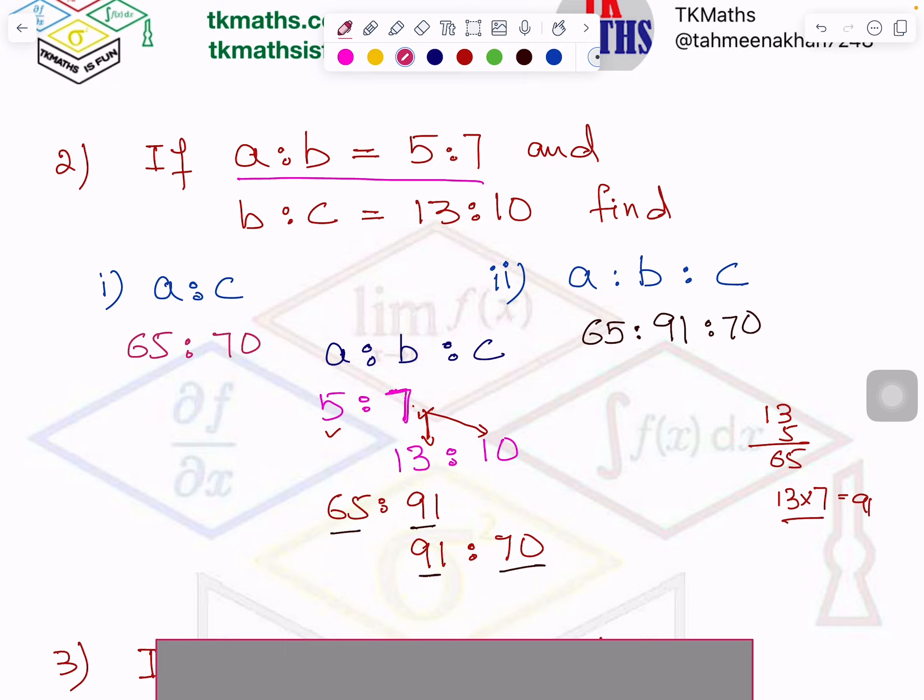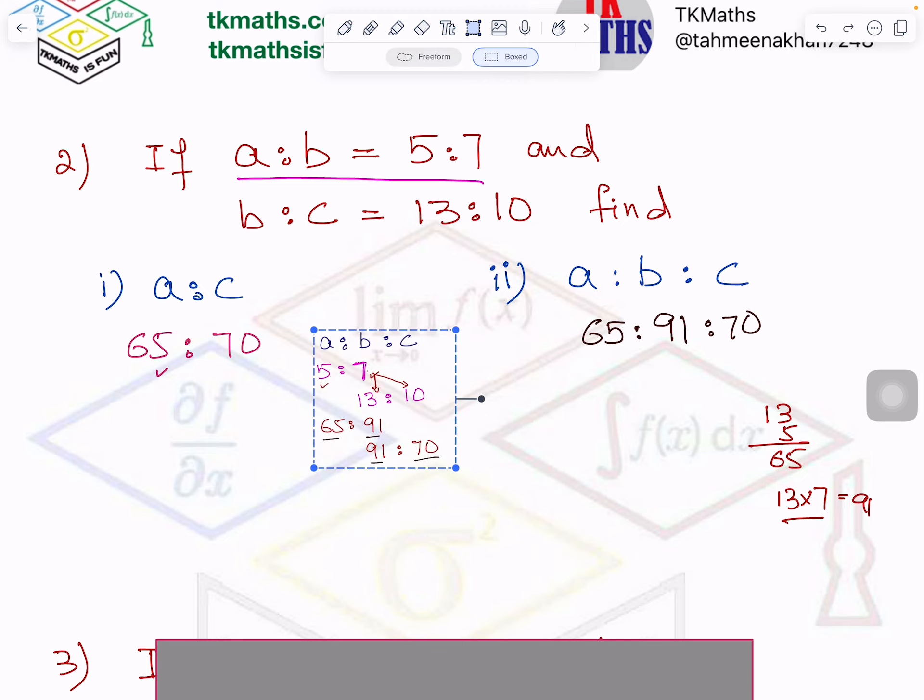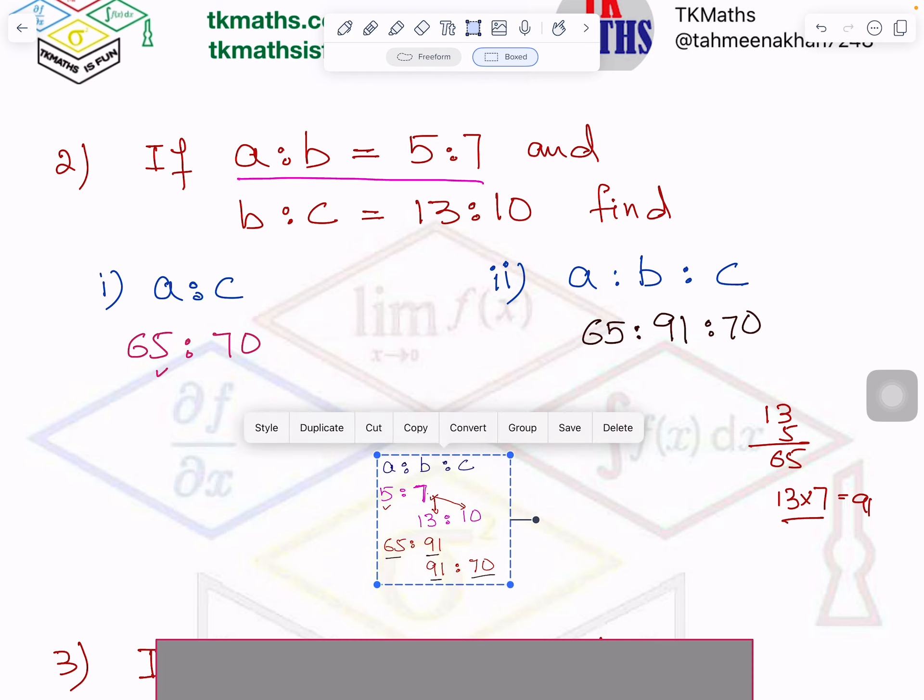So this is 70. Now you will simplify 65 and 70. So you will cancel it by the table of 5. 5 is better because the last digit is 5 and 0. So 5 times 1 is 5, 5 times 3 is 15, 5 times 1 is 5, 2 will go here, 5 times 4 is 20. So I got here 13 is to 14 ratio.